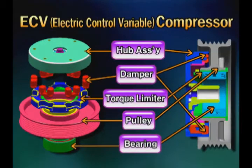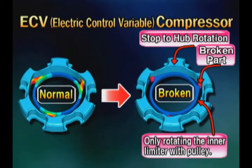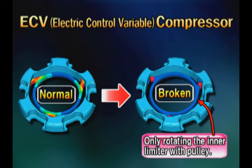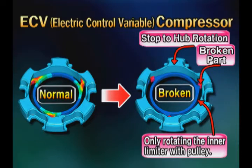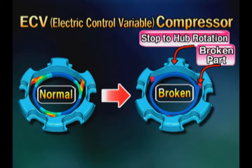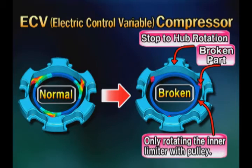As the compressor operates at all times, it may not rotate due to adhesion or overload. At this time, to protect the engine, there is a torque limiter so that only the inner wheel can be rotated.